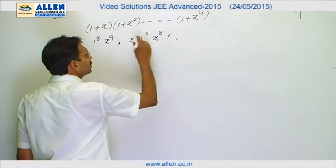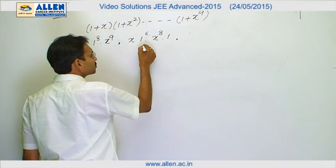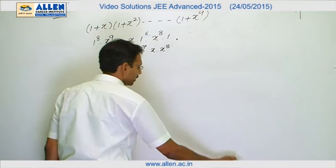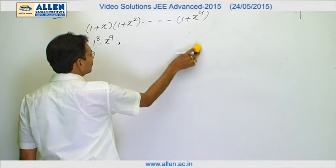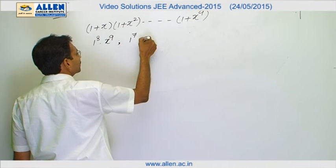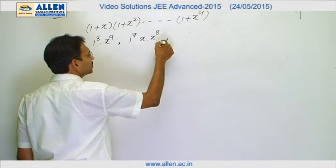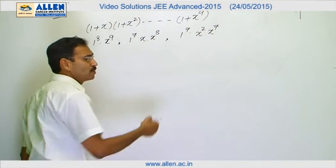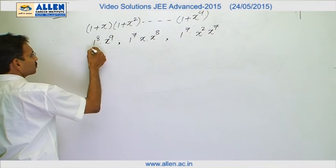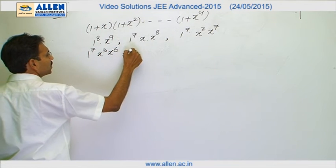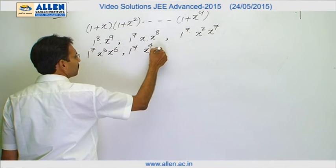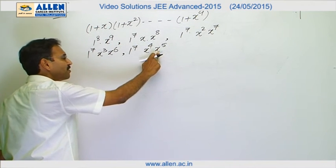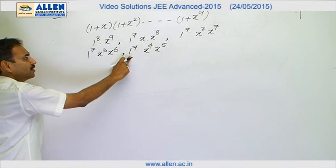Now we will consider 1 raise to the power 7 x, x power 8, rather than writing in this order. It was just to make you understand. So it is 1 raise to the power 7 x, x raise to the power 8. Then 1 raise to the power 7 x square x raise to the power 7. This way one more x raise to the power 9 appears. Then 1 raise to the power 7 x cube x power 6, 1 raise to the power 7 x power 4 x power 5. This is 1 plus x power 4, this is corresponding to 1 plus x power 5 and rest of the 7 factors are contributing 1.